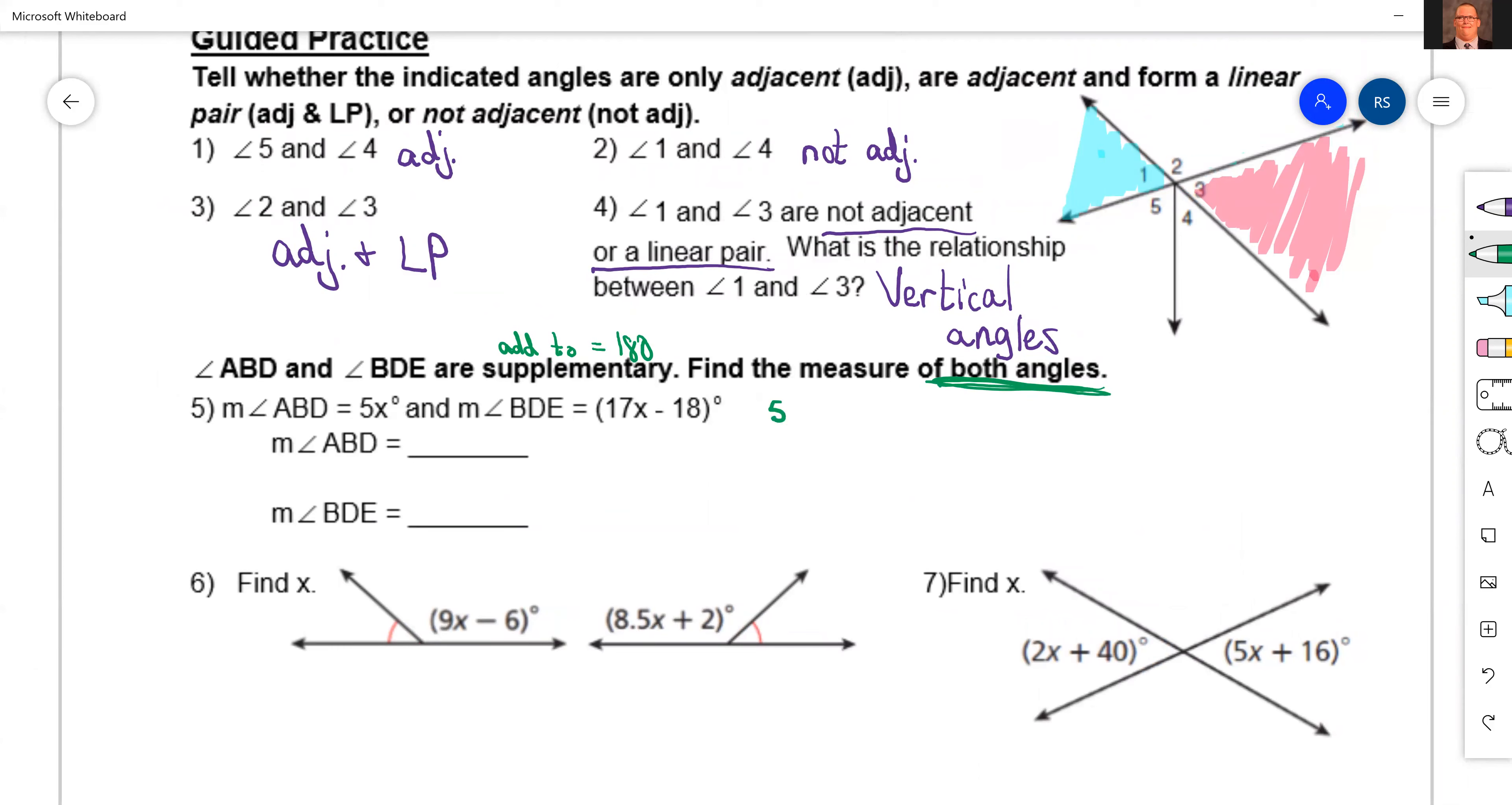Well, they give us the measure of the angles and they tell us they're supplementary, so why don't we add them together and set them equal to 180. 5x plus 17x minus 18 equals 180. Let's combine now. 5x plus 17x is gonna be 22x minus 18 equals 180.